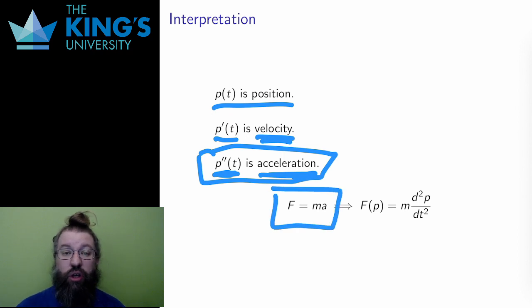If a force acts on an object, it causes acceleration, but the mass of the object affects this acceleration such that the force must be equal to the mass times the acceleration. And this is the core of Newtonian mechanics of motion.